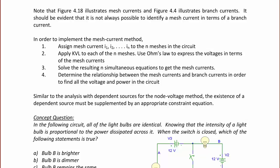In order to implement the mesh current method, step 1 is assign mesh currents I1, I2, up to IN for the number of meshes. Step 2, apply KVL to each of the N meshes and use Ohm's law to express the voltages in terms of the mesh currents. Step 3, solve the resulting N simultaneous equations to get the mesh currents. Step 4, determine the relationship between the mesh currents and branch currents in order to find all the voltage and power in the circuit. Similar to the analysis with dependent sources for the node voltage method, the existence of a dependent source must be supplemented by an appropriate constraint equation.